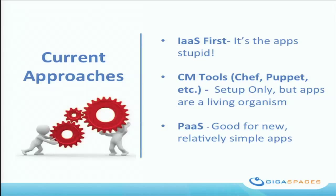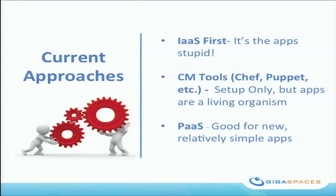The current approaches organizations have taken can be grouped into three categories. The first is what I call the IaaS-first approach: building a very nice, shiny infrastructure as a service that lets you spawn compute resources on demand. The problem is that the applications still exist outside it. In the case of Bank of America, we're talking about 7,000 applications built in a pre-cloud world that you now need to bring to the cloud. IaaS alone only deals with a fraction of that problem.